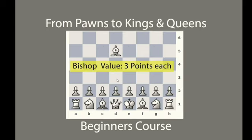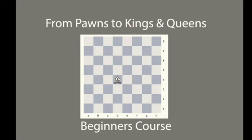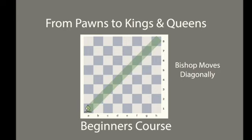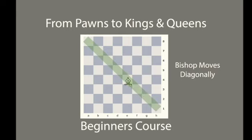The bishop is worth three points. Two bishops are six points. The bishop moves on diagonals. As you can plainly see, this bishop controls the a1 to h8 diagonal. If he was on the light color square, he would be controlling the h1 to a8 squares.